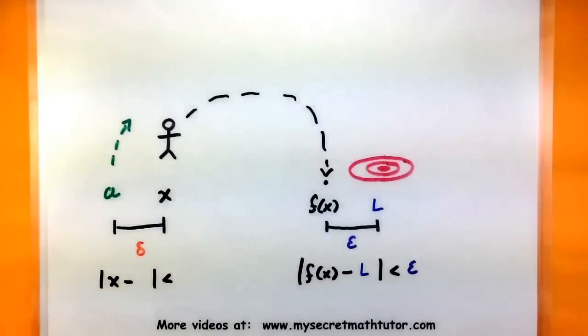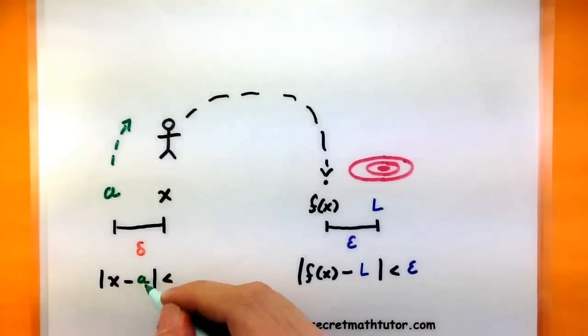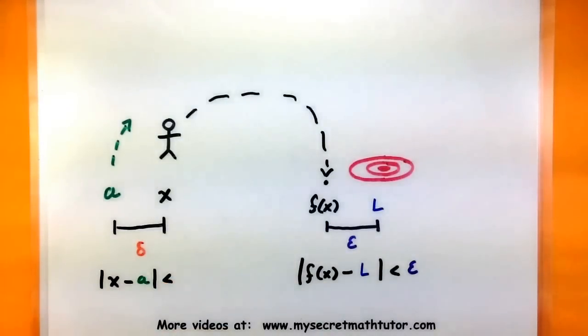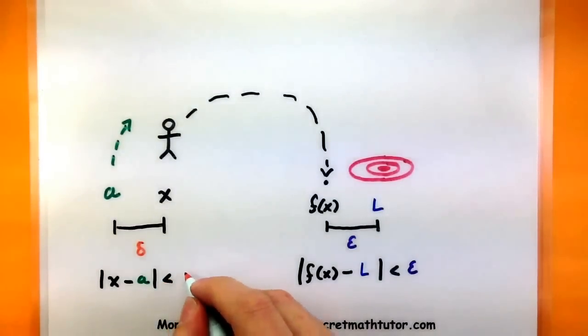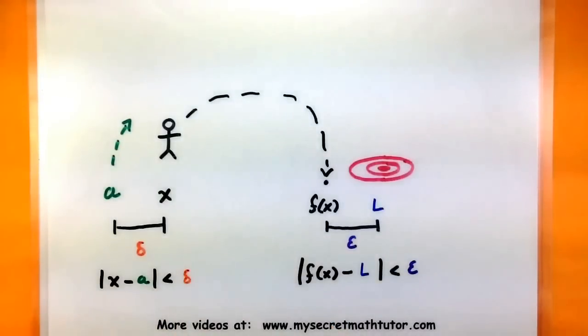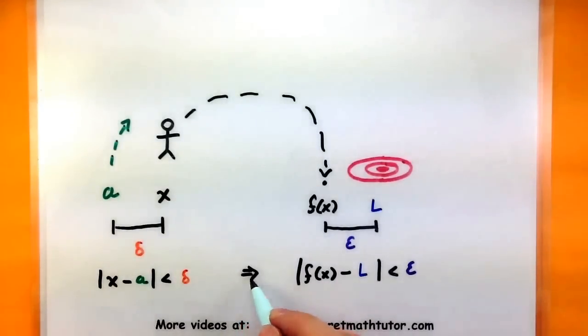So again, absolute value is a distance. We'll make sure that we choose our x values so that they are a distance of delta away from a. So if we make sure we choose our x values sufficiently close to a, it forces our function to be sufficiently close to L, then I know this has a limit.